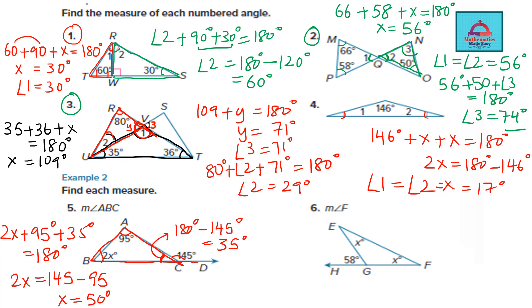For question 6, both angles marked are x. Find the third angle by subtracting from 180: 180 minus 58 gives that angle. Then apply the angle sum property to solve for x, which comes out to be 29 degrees. That's how you solve these questions — check your final answers in the next slide.